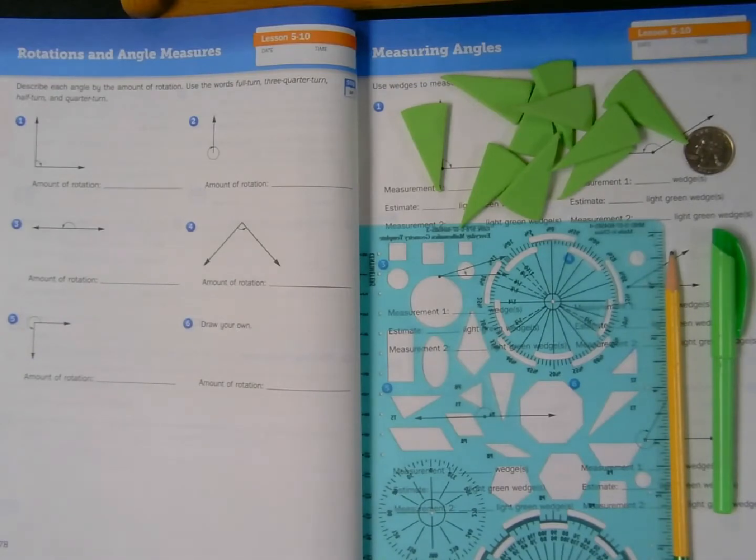Well hello boys and girls, it's Mr. Wasserman. Today I'm going to be kicking it to you old school. Instead of using my digital whiteboard app, I'm going to be recording my lesson using my document camera and my math journal because we're going to be doing some drawing and measuring of angles. I'm in my math journal volume 2, pages 178 and 179, rotations and angle measures and measuring angles. This is lesson 10 of unit 5.